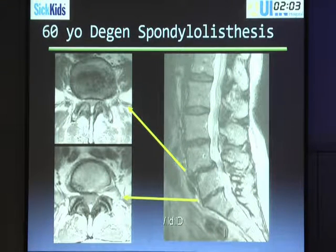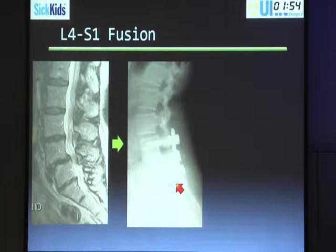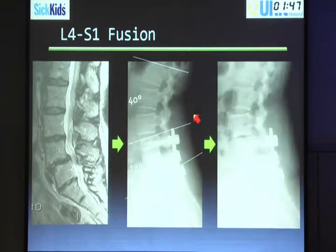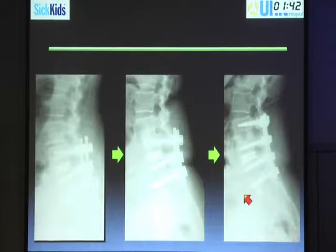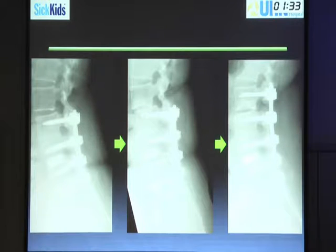A 60-year-old with degenerative spondylolisthesis and stenosis — we did a fusion again with very little restoration of the lower arc lordosis, resulting in about 10 degrees of lordosis. She opened up the discs in the upper levels to compensate with 40 degrees, and it didn't take long for degeneration to start at the next level. We added on a fusion but had the same problem at the other level because we never addressed the primary issue — the lower arc kyphosis that was not restored in the first surgery.